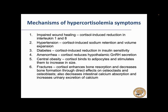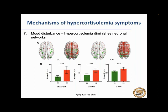Cortisol can also cause psychiatric disturbances. A number of patients with Cushing's disease report not quite being right, and some are on psychotherapy or psychological medications. It has been demonstrated through advanced functional neuroimaging that hypercortisolemia shuts down neuronal networks and cell-to-cell communication between neurons. Mood disturbances are associated with diminished neuronal network activity in the frontal lobes. This is an area of ongoing research and one I find quite interesting.